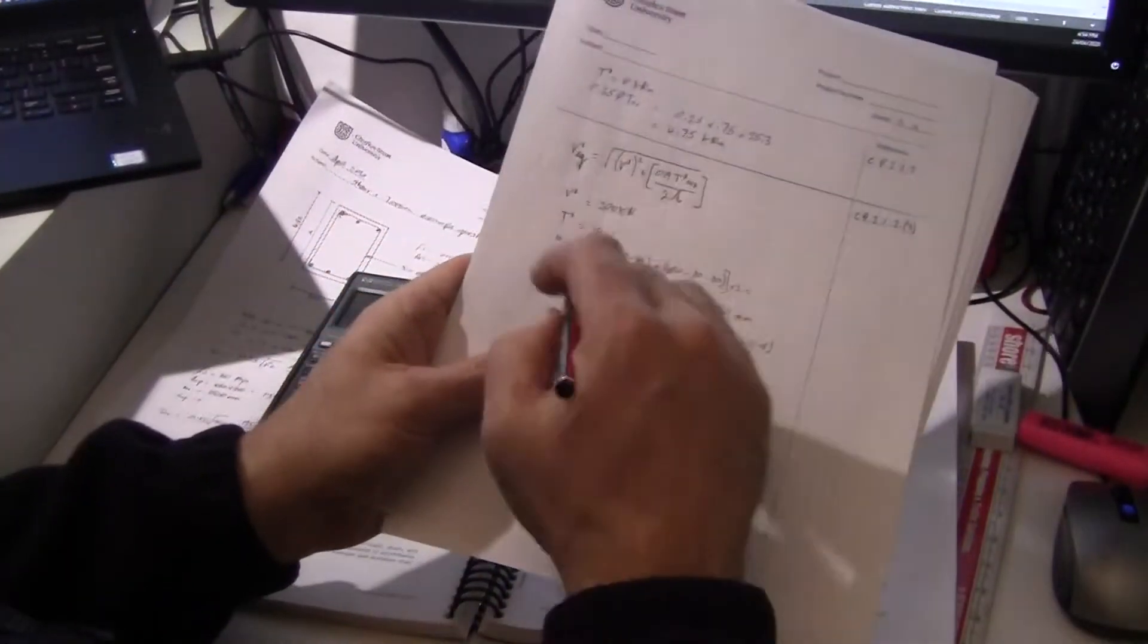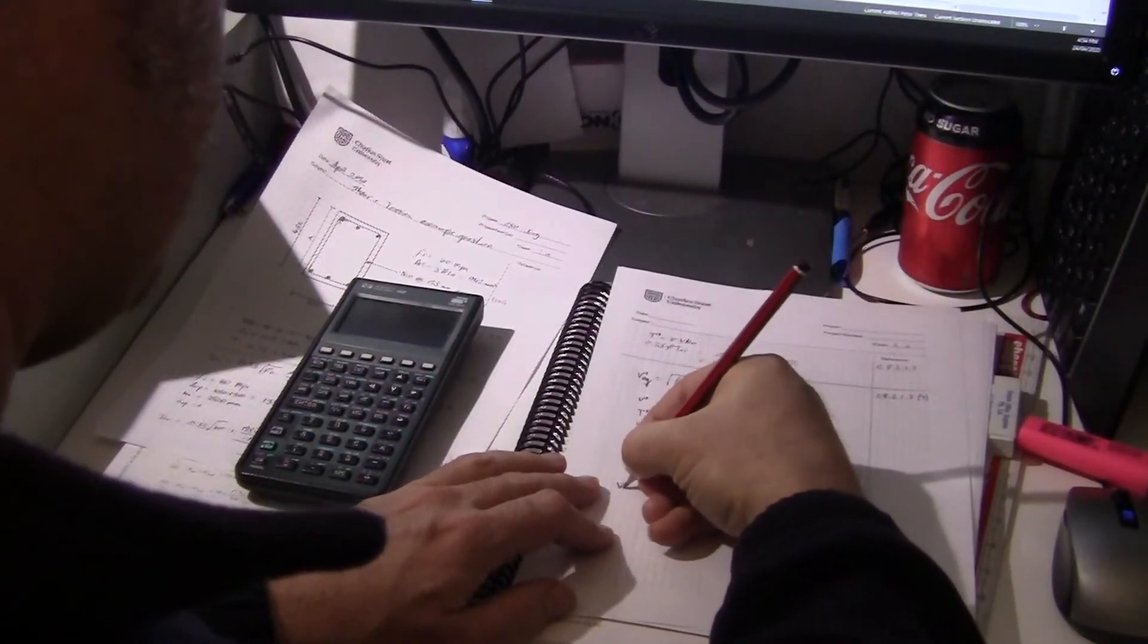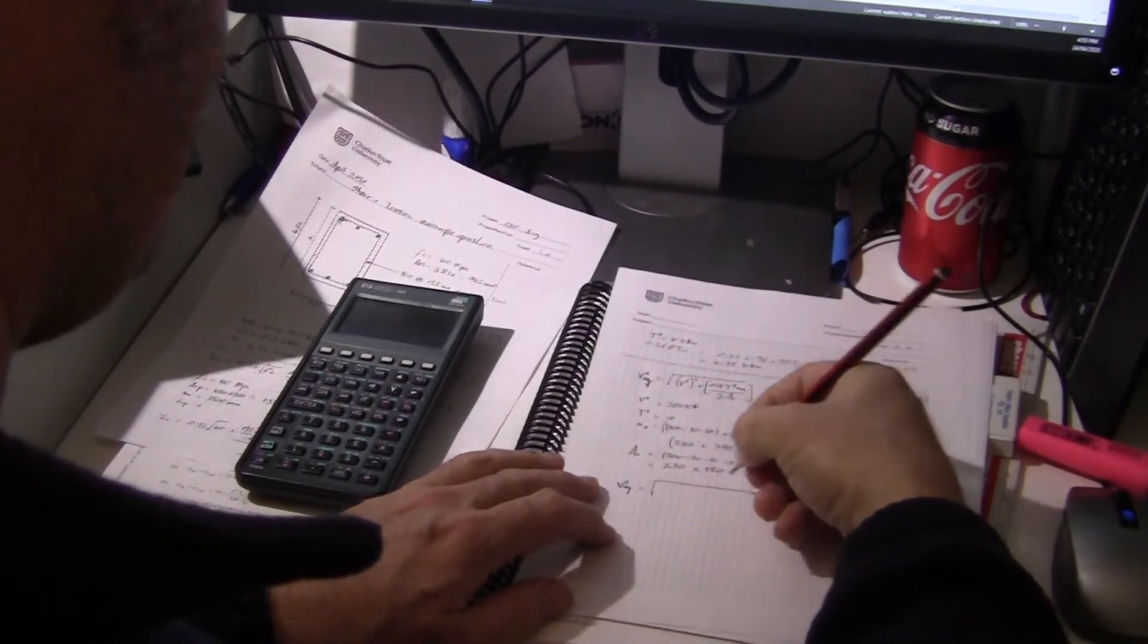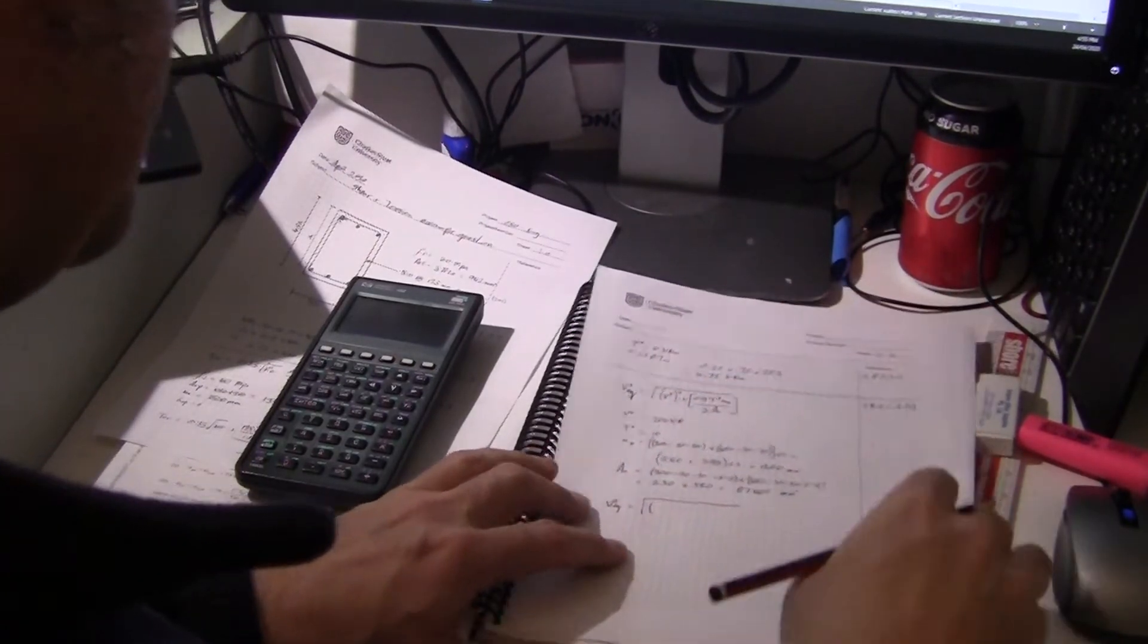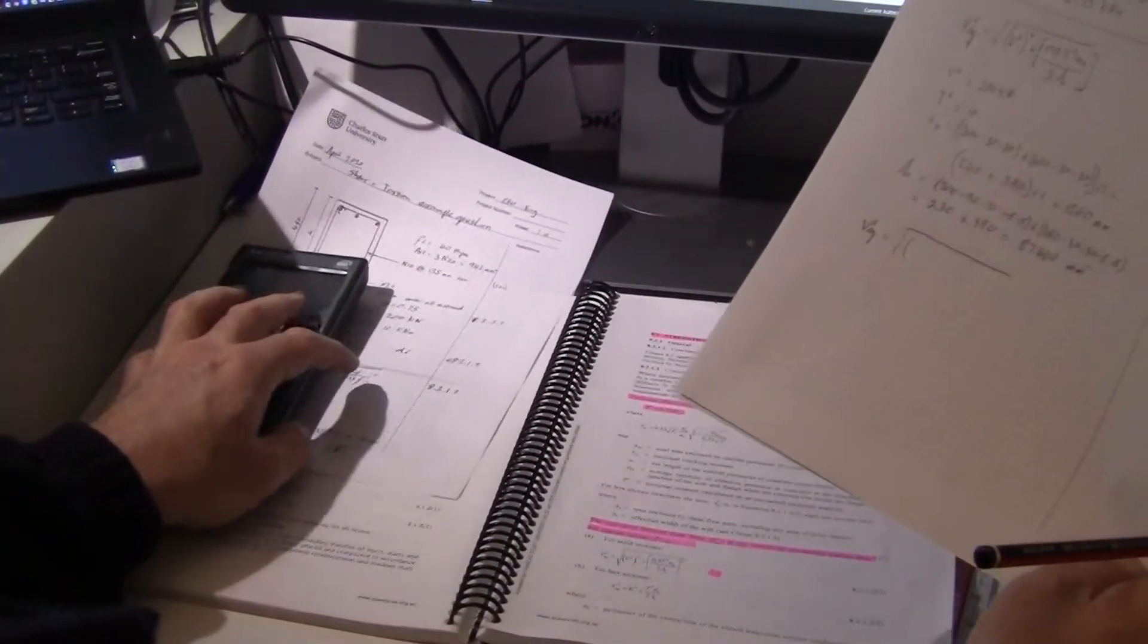So we've got all the stuff in this equation now so we can work it out. So our V star EQ equals the square root of V star squared. Now we're going to work in... I guess if we have that we have to work in newtons and millimeters because otherwise we might run into troubles here.